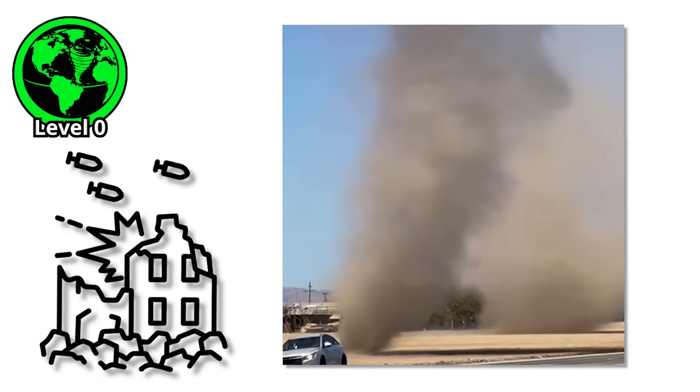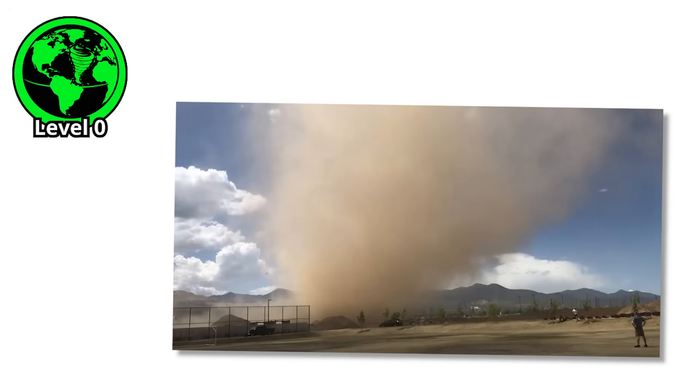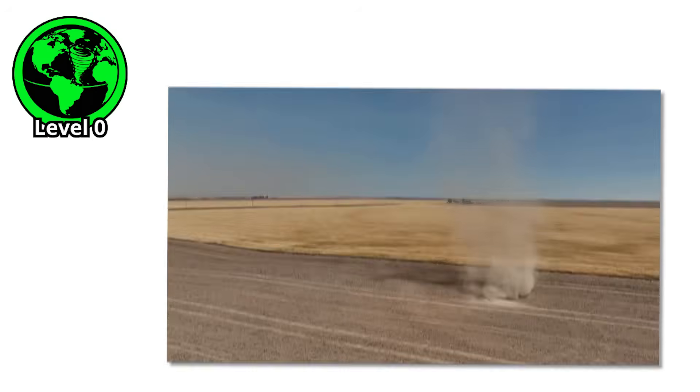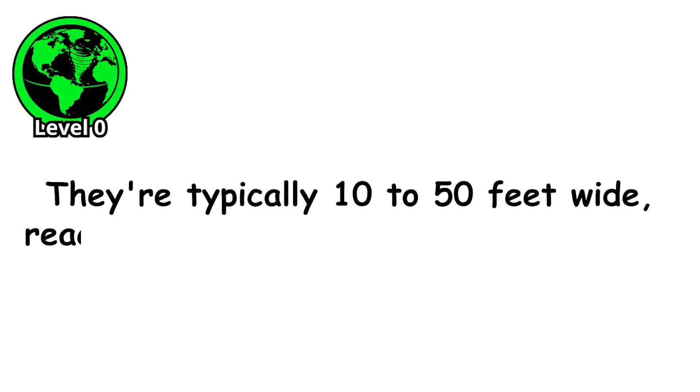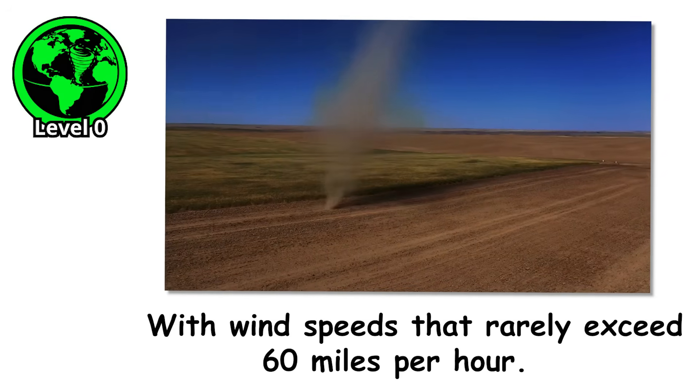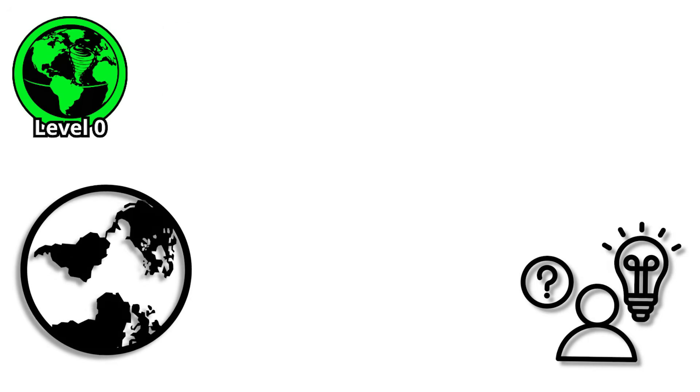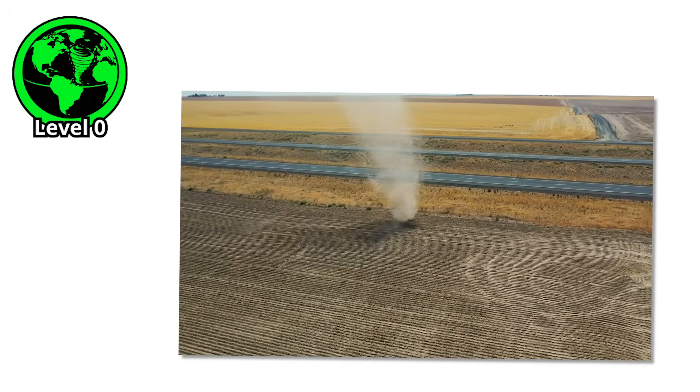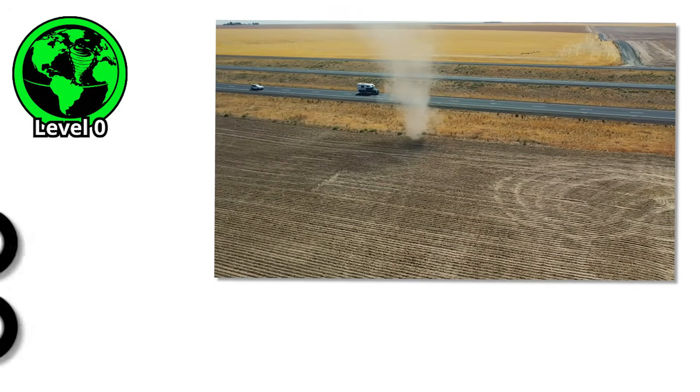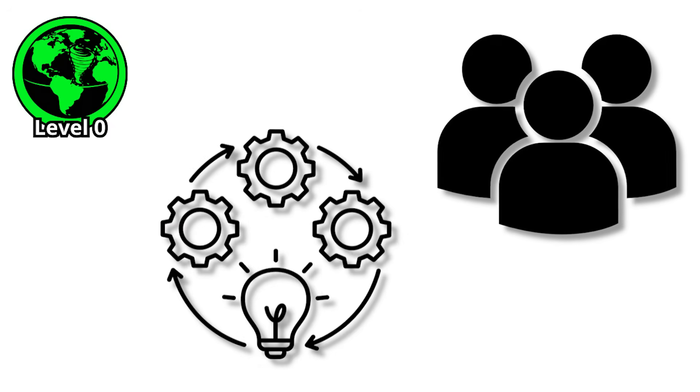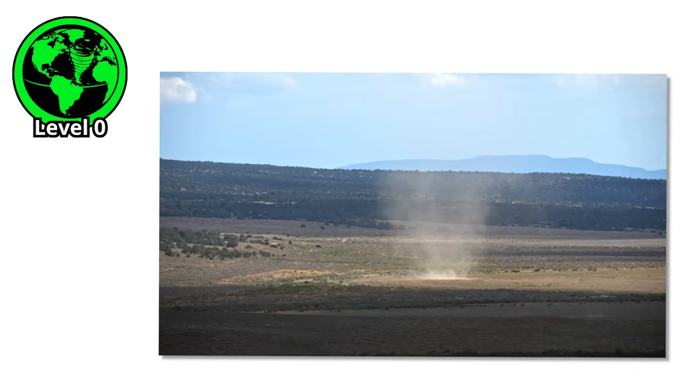Not the kind that makes headlines or destroys cities, but a genuine atmospheric vortex nonetheless. They form when the ground heats unevenly, creating pockets of rising hot air that start to rotate. They're typically 10 to 50 feet wide, reaching heights of a few hundred feet, with wind speeds that rarely exceed 60 miles per hour. On Earth, they're curiosities. Farmers see them skip across fields. Kids chase them. They're the universe's way of reminding us that weather is just air moving around, trying to balance out temperature differences. But here's what most people don't realize.